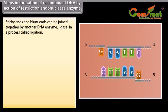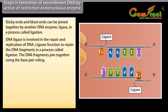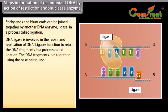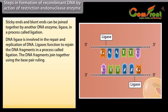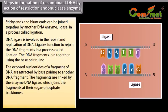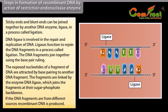Sticky ends and blunt ends can be joined together by another DNA enzyme, ligase, in a process called ligation. DNA ligase is involved in the repair and replication of DNA. Ligases function to rejoin the DNA fragments. The exposed nucleotides of a DNA fragment are attracted by base pairing of another DNA fragment, and the fragments are linked by the enzyme DNA ligase which joins them at their sugar-phosphate backbones. If the DNA fragments are from different sources, recombinant DNA is produced.